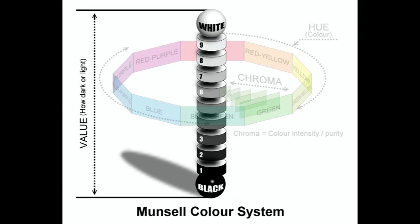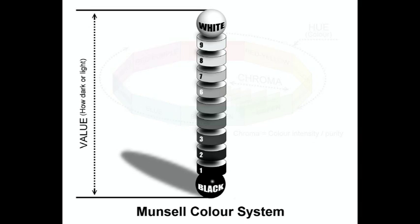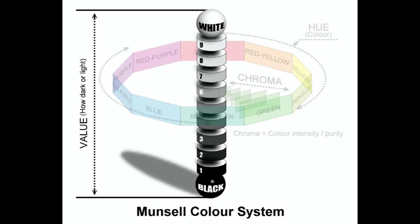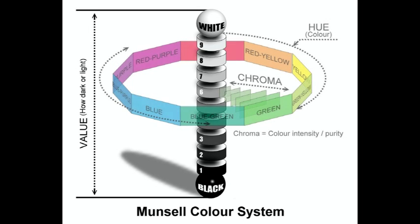The second component of the Munsell system is the value of the color — in other words, how light or how dark a color is, also referred to as its tonal value. You can see this as the center pole on the picture. At the two extremes we have black and white, which Munsell said were impossible to obtain using pigment. So the value scale ranges from near white to near black with seven steps in between, and the hue circle can step up and down this value pole as needed.